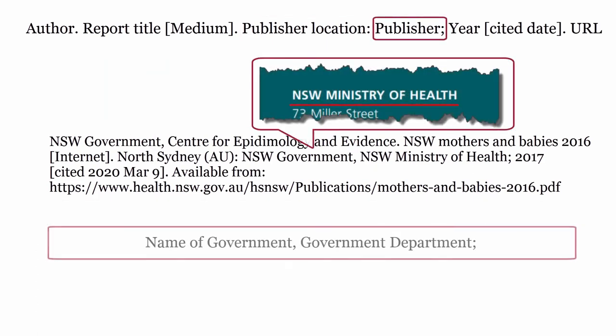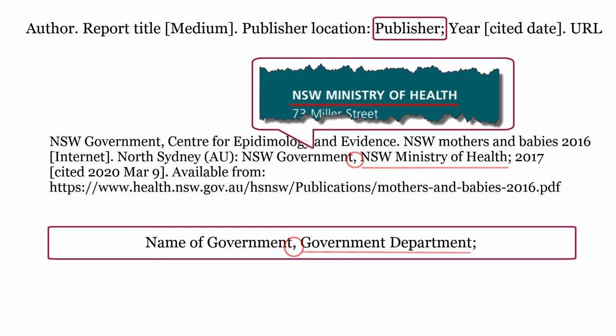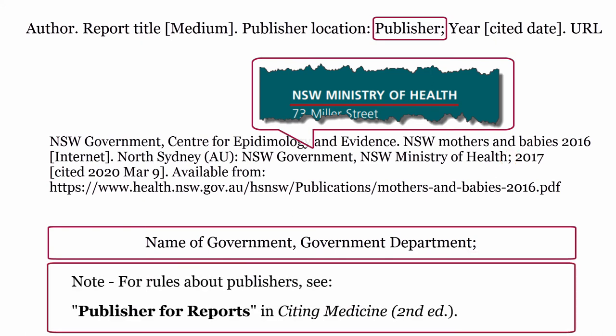Publisher: this is the organization who issued the report. Publisher is formatted using the name of the government, followed by a comma, then the name of the government department, and the publisher information with a semicolon. For rules about publishers, see publisher for reports in Citing Medicine, second edition.